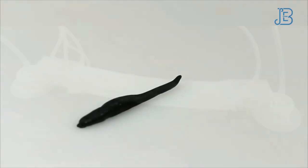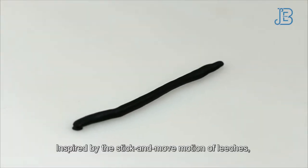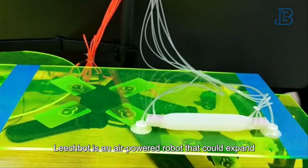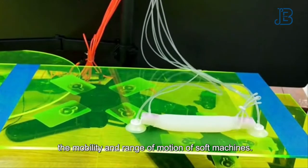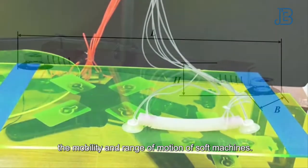Meet LeechBot. Inspired by the stick and move motion of leeches, LeechBot is an air-powered robot that could expand the mobility and range of motion of soft machines.